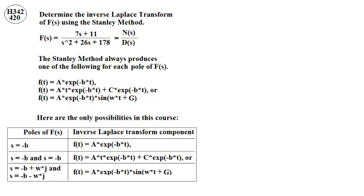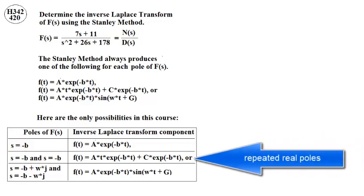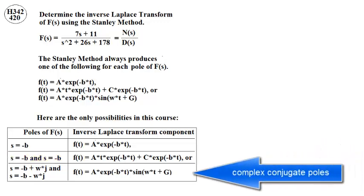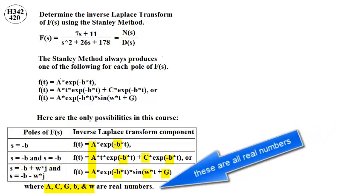Here are the only possibilities in this course. There are three time-domain functions based on non-repeating real poles, based on repeating real poles, based on complex conjugate poles. These are all real numbers.